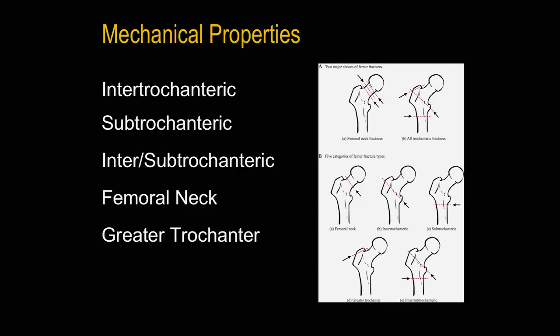Moving more into mechanical properties, we're looking at two major classes with five different categories just in the femur. There's intertrochanteric, subtrochanteric, inter- and subtrochanteric as a combination of the two, the femoral neck, and the greater trochanter. Each type of fracture, even in this subset, can carry a different surgical intervention, a different orthotic intervention, and ultimately a different treatment plan.